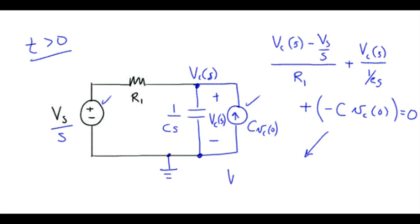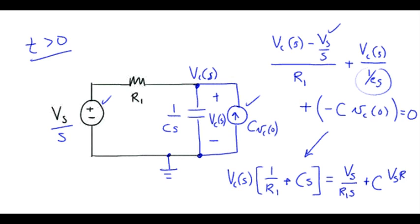Let me collect my terms associated with the desired unknown. So here I'm just doing 1 over 1 over Cs. And let me put the constant terms on the other side, the terms not involved with the capacitor voltage. So that gives Vs over R1s, that was the term right here, and the other term.